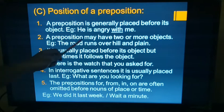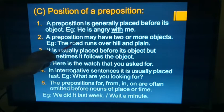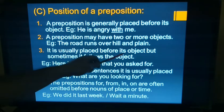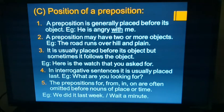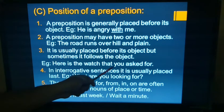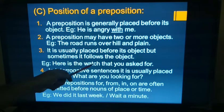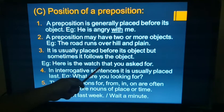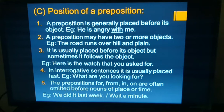A preposition may have two or more objects. Example: 'The road runs over hill and plain' — two objects, 'hill' and 'plain.' A preposition is usually placed before its object, but sometimes it follows the object. Example: 'Here is the watch that you asked for.' When relative pronouns like 'that' or 'which' are used, the preposition is placed at the end.